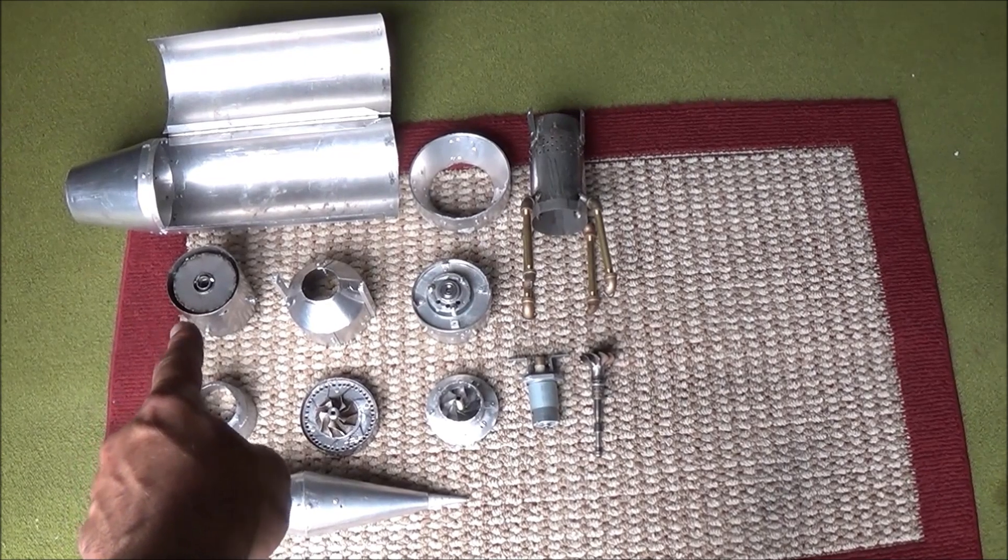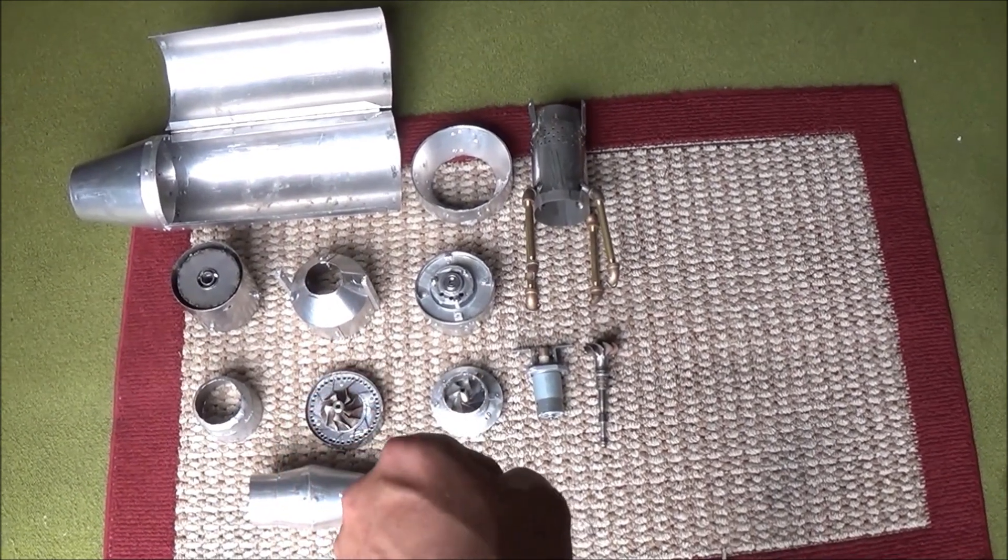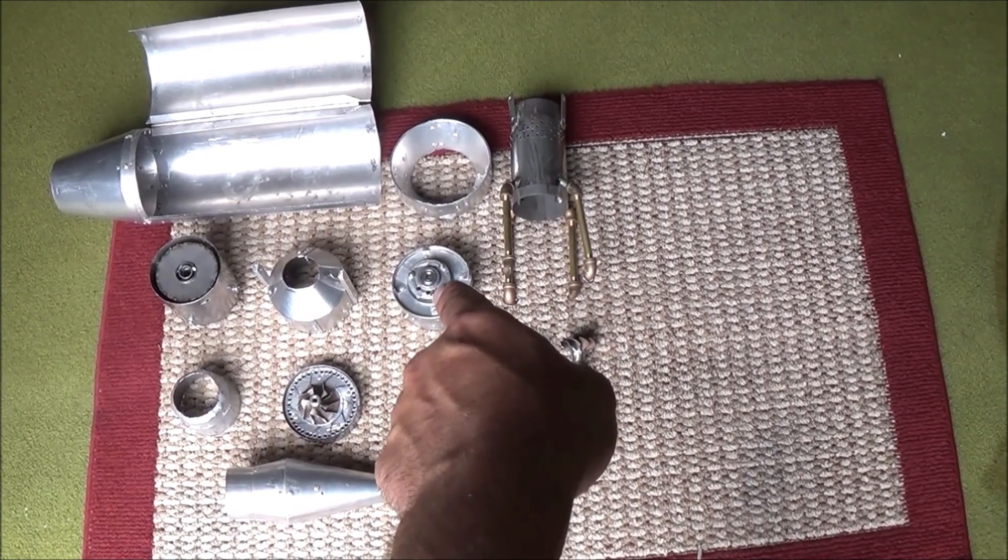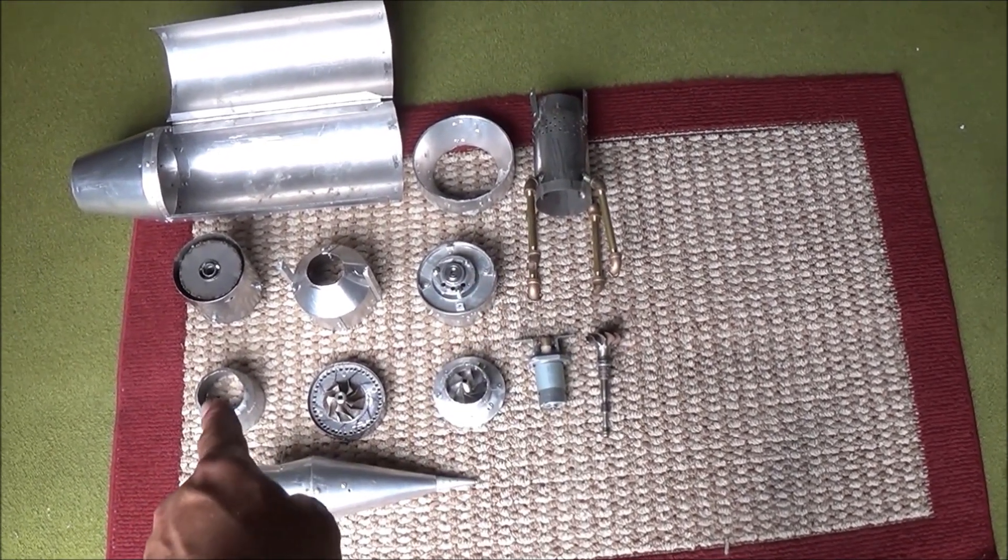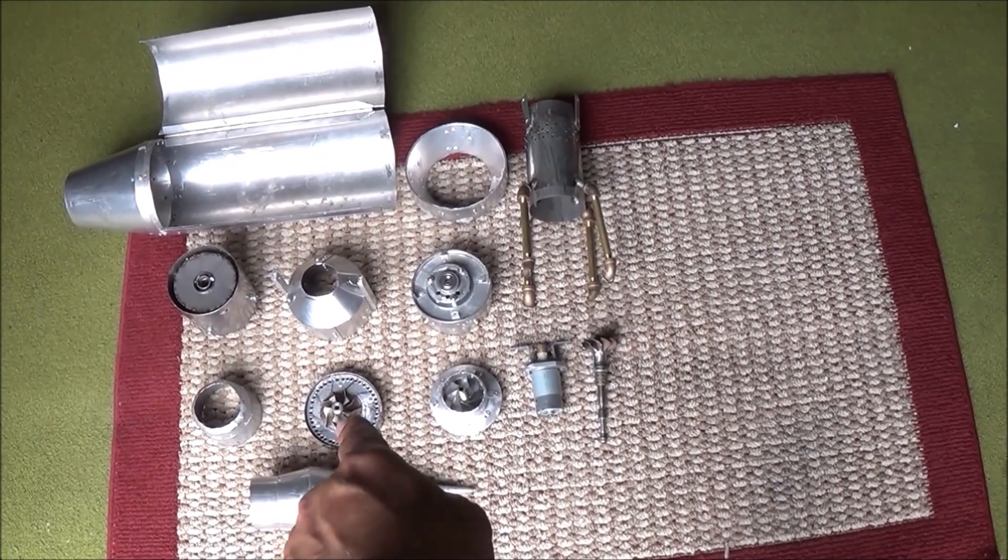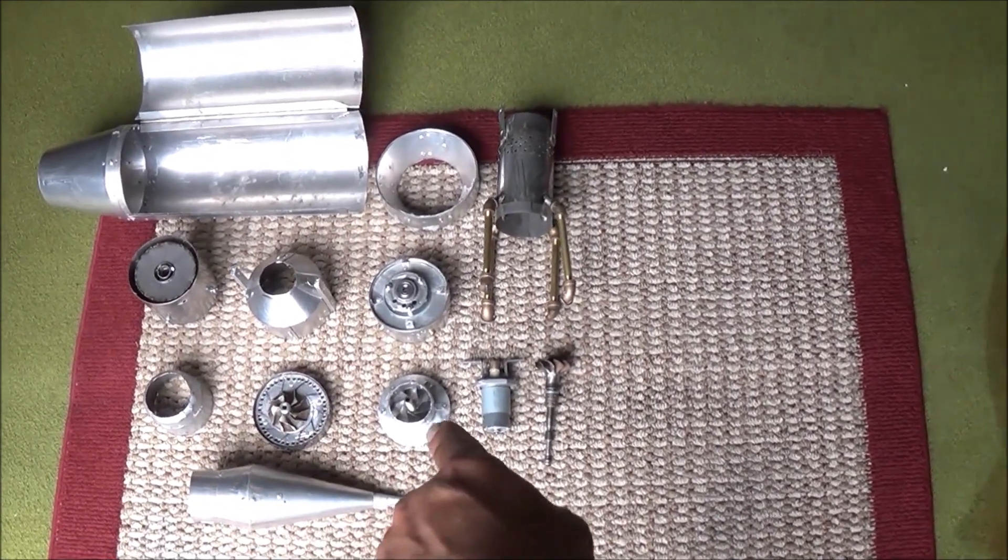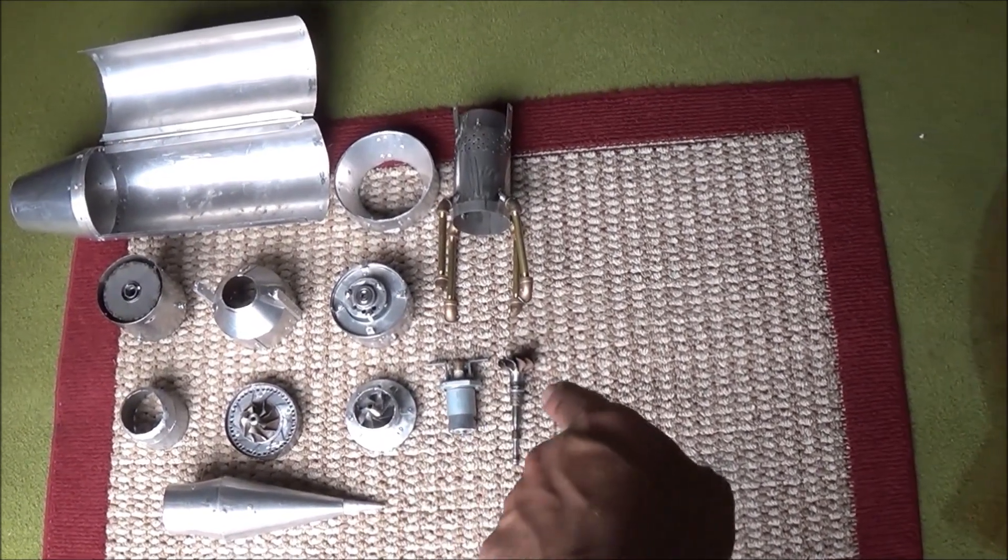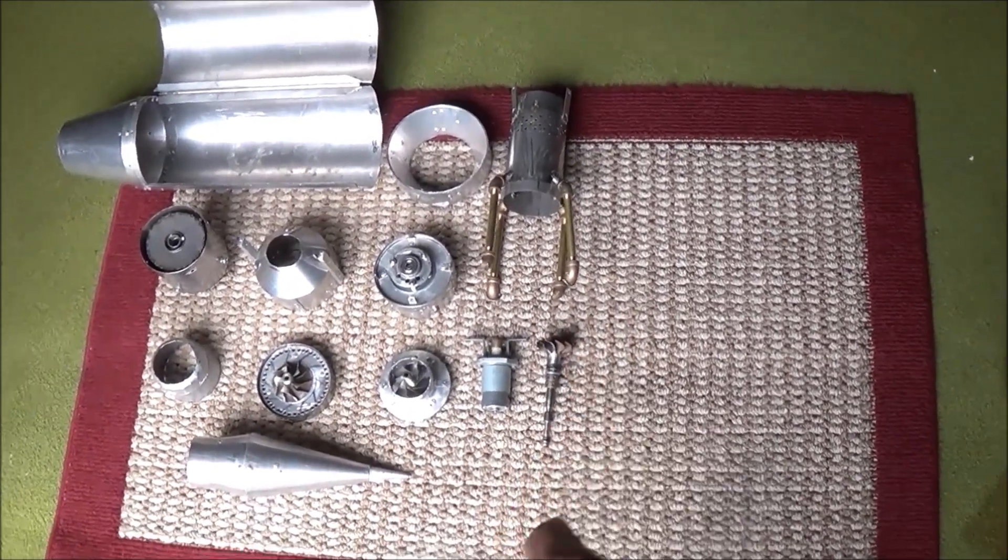We have a ramjet engine and afterburner portion here, the combustion chamber for the main turbojet, the cowling for our first stage compressor, the intake for our second stage compressor, the final thrust reduction nozzle, our diffuser and our second compressor blade right there.